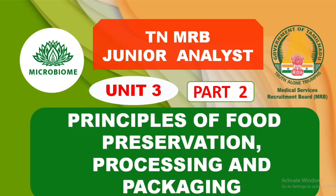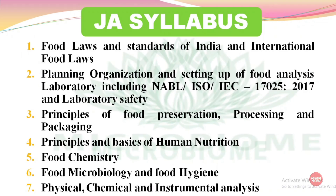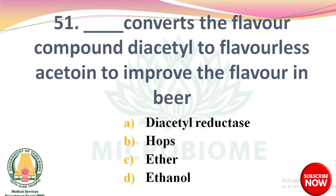Hi everyone, today we are going to discuss Unit 3 of Part 2. Unit 3 covers principles of food preservation, processing, and packaging. Previous video links have been given in the description, so please go through it and subscribe to our channel. Let's move on to the questions. Dash converts the flavor compound diacetyl to flavorless acetoin to improve the flavor in beer.